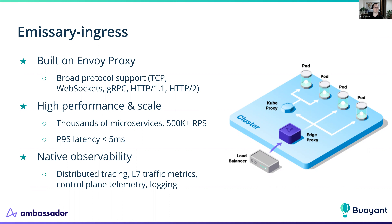Emissary Ingress and Ambassador Edge Stack run at super high scale all over the world. There are amazing use cases — scaling from zero to crazy amounts of requests per second based on TV shows starting, people logging in, that kind of stuff. We work with gaming companies and financial companies. We've worked really hard to make performance and security top notch. Thanks to the community — folks constantly raising issues, contributing pull requests — it has got rock solid over the years. We support distributed tracing, OTEL headers, L7 traffic metrics like RED metrics (rates, errors, duration), and lots of logging via Envoy logs.